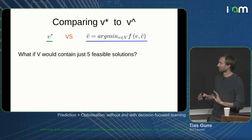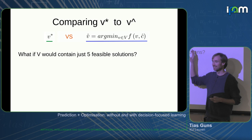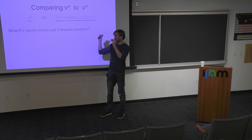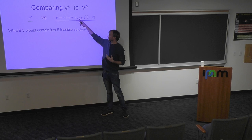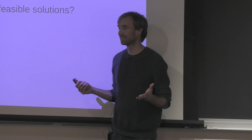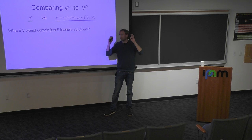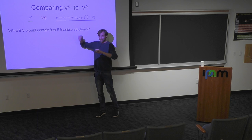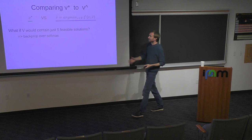Now for a little thought exercise. Knowing that this subgradient compares V-star to V-hat: what if our feasible space contained just five solutions? What would a machine learning person do? Exactly — you have an argmin or argmax over five labels, you can treat them as five classes. Your solver either selects the right one or chooses one of the other four. You can backpropagate over the softmax; you don't actually need to backpropagate over the combinatorial optimization problem.